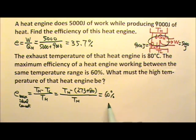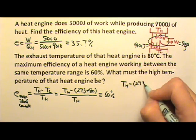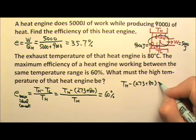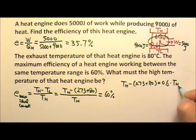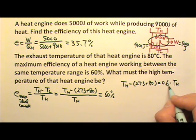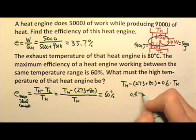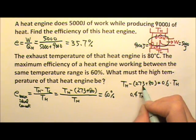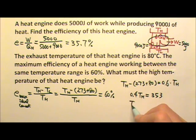So I can multiply by TH on both sides. So I get TH minus 273 plus 80 equals 0.6 times TH. If I subtract by 0.6 TH on both sides, I get 0.4 TH equals, if I move this to the other side, this is 353, so TH must be 883 Kelvins.